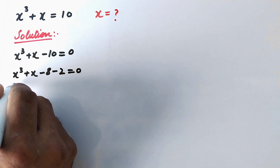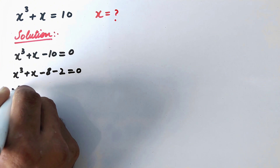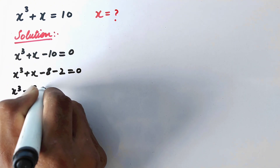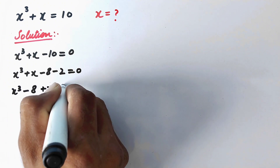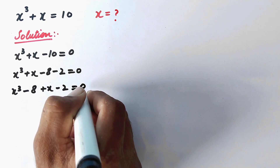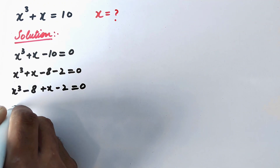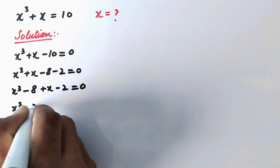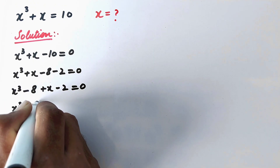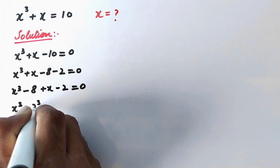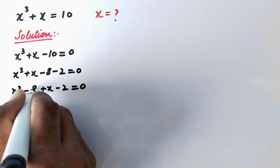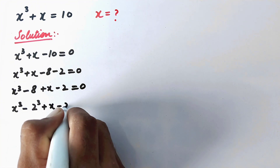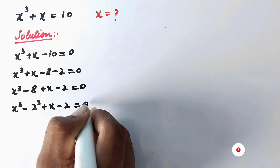Now we replace the numbers: x raised to the power 3 minus 8, plus x minus 2, is equal to 0. We can write x raised to the power 3 minus 2 raised to the power 3, since 2 cubed equals 8, plus x minus 2, equal to 0.